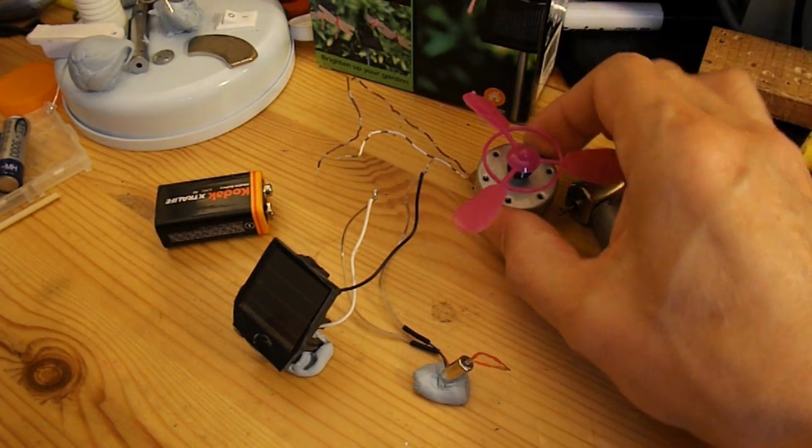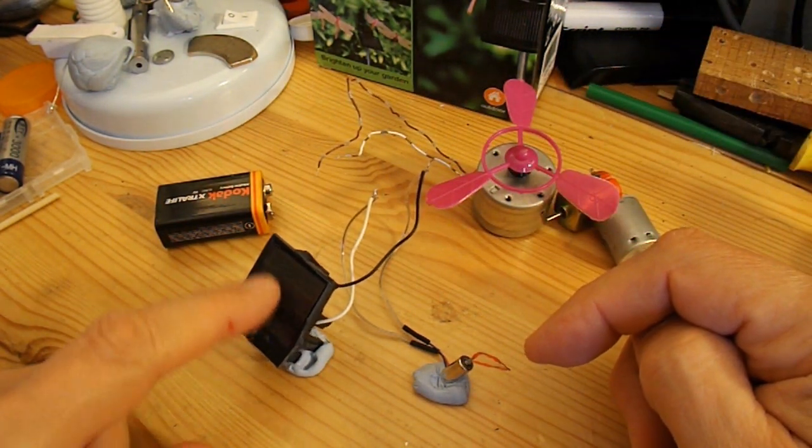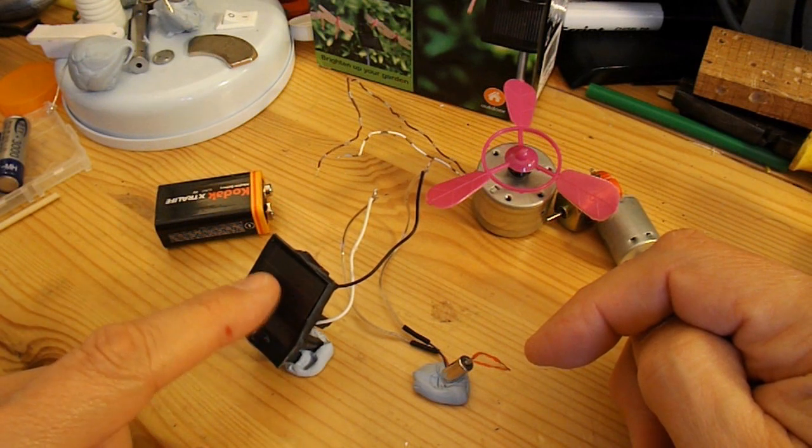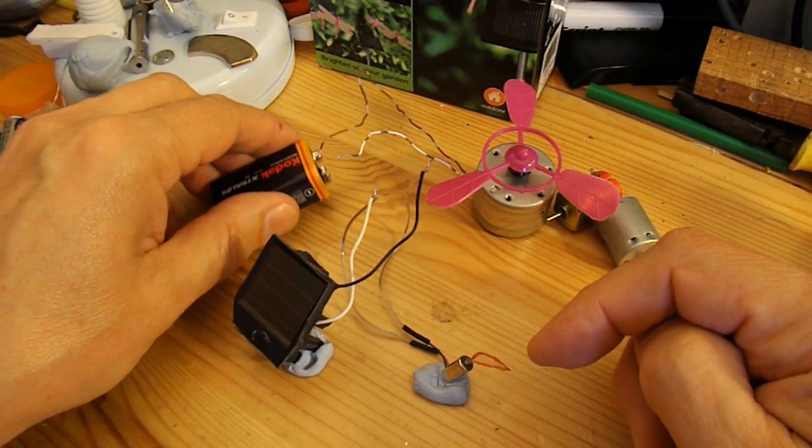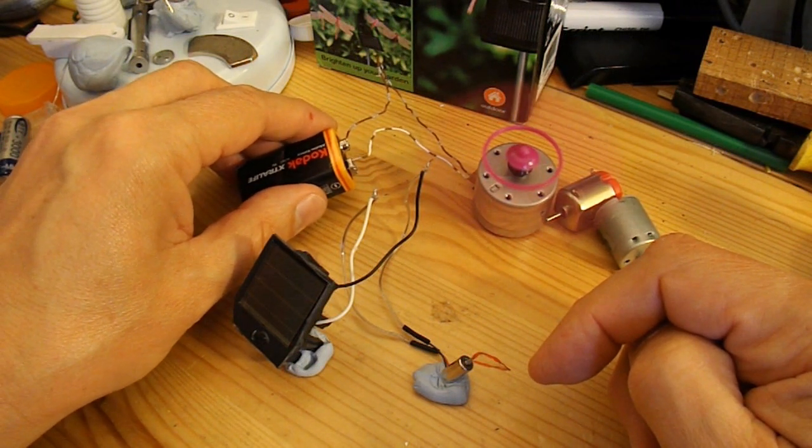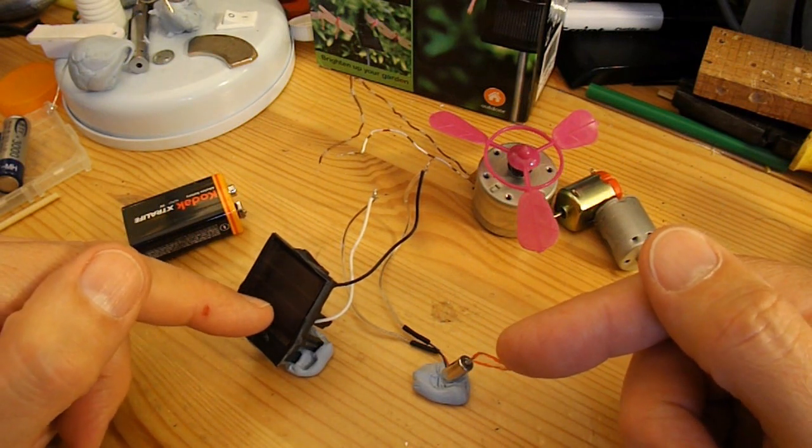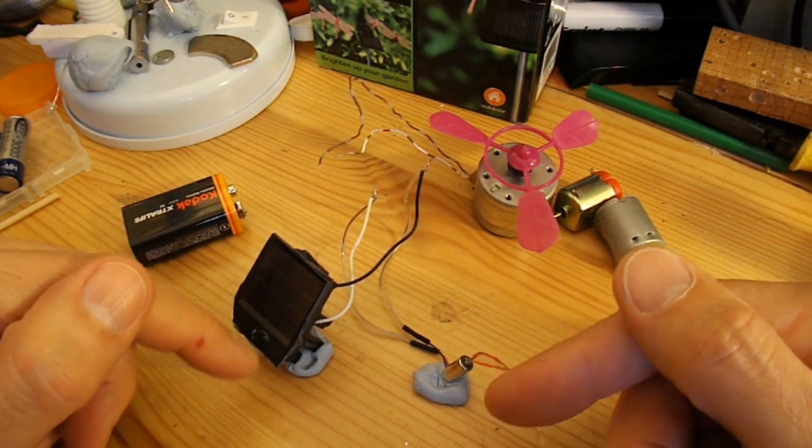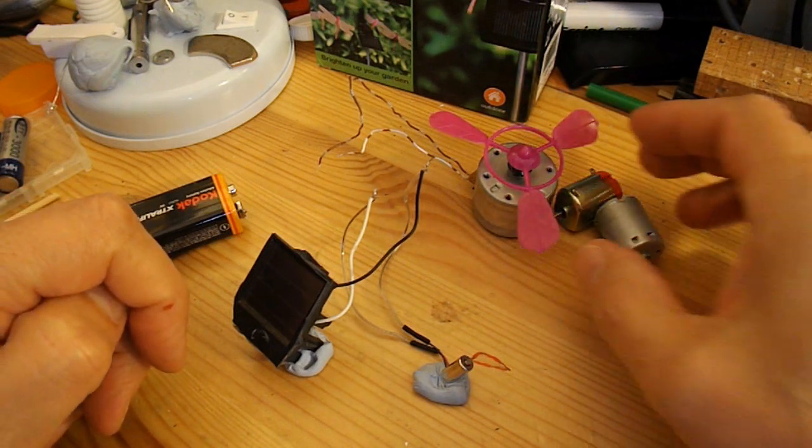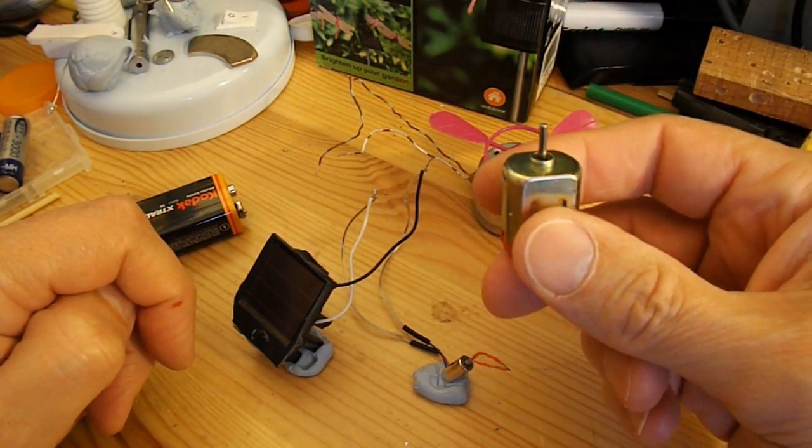If you want to run something like that size motor, you're never going to get enough power out of one of these little panels. You need something like 9 volts to run it. So one of those little solar panels is really a non-starter if you're thinking of running a decent sized electric motor. You really want something getting on for this size.